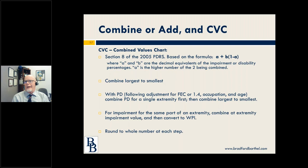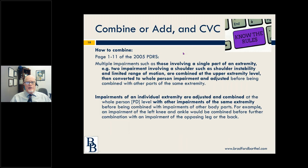With permanent disability, the instructions within the rating schedule are to combine PD for a single extremity first, and then go largest to smallest. We do the right arm, we do the left arm, we do the right leg, we do the left leg — and then combine largest to smallest. You always round to a whole number at each step — we don't want fractions or decimals.